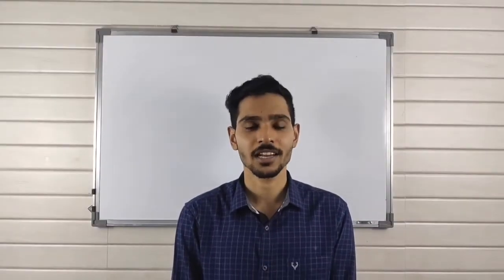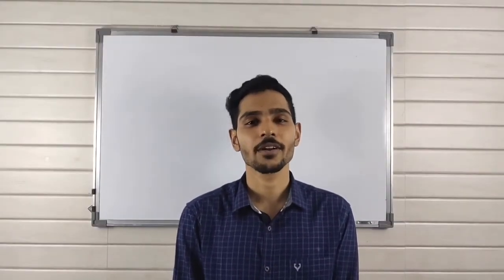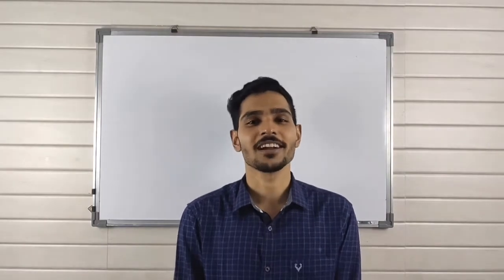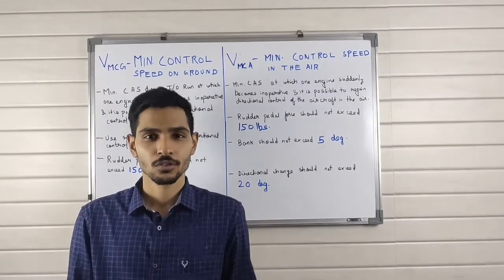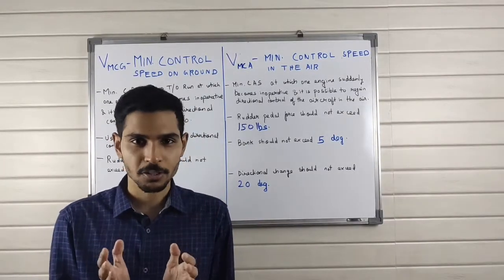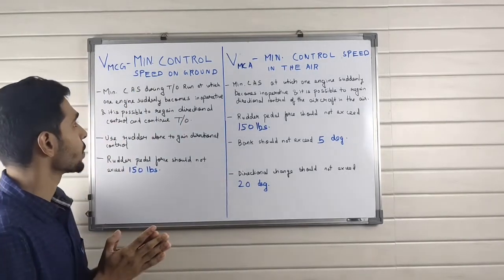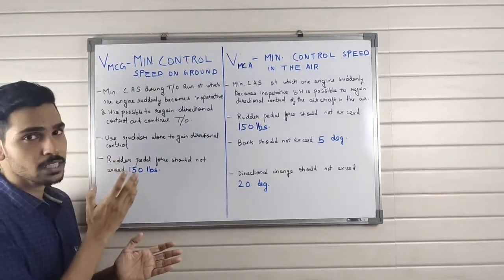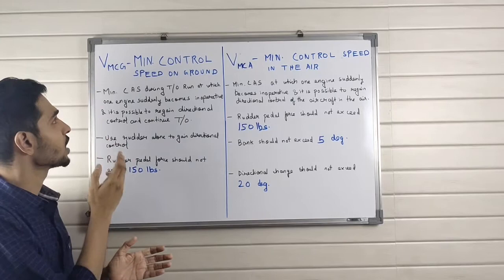Hello guys, welcome to my channel. Today we will be doing different V speeds, so let's get started. First, we look at minimum control speeds. We have two speeds: VMCG, which is the minimum control speed on the ground, and VMCA.